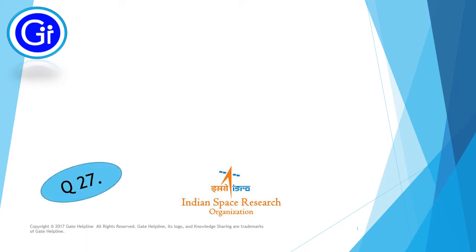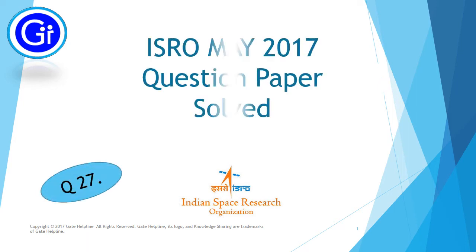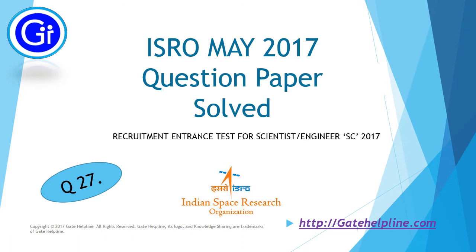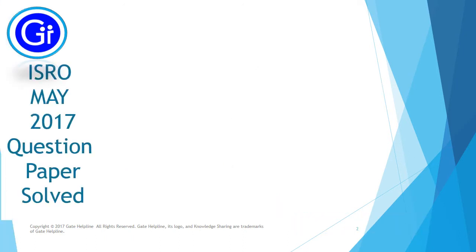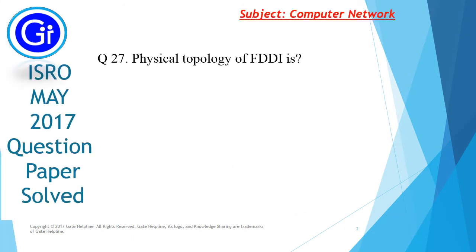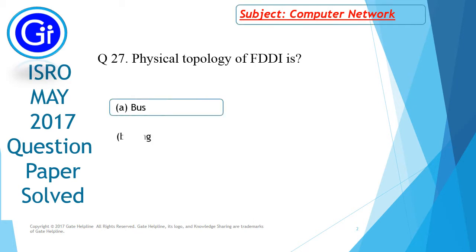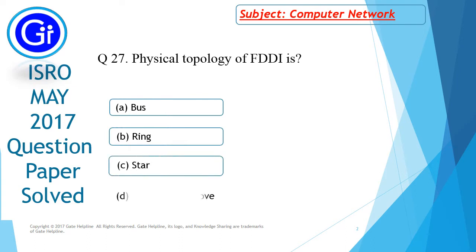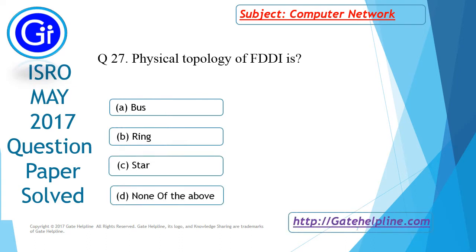Friends, today we will see question number 27 from ISRO MI 2017 question paper. Question number 27 is: the physical topology of FDDI is — and the options are A) bus, B) ring, C) star, and D) none of the above.